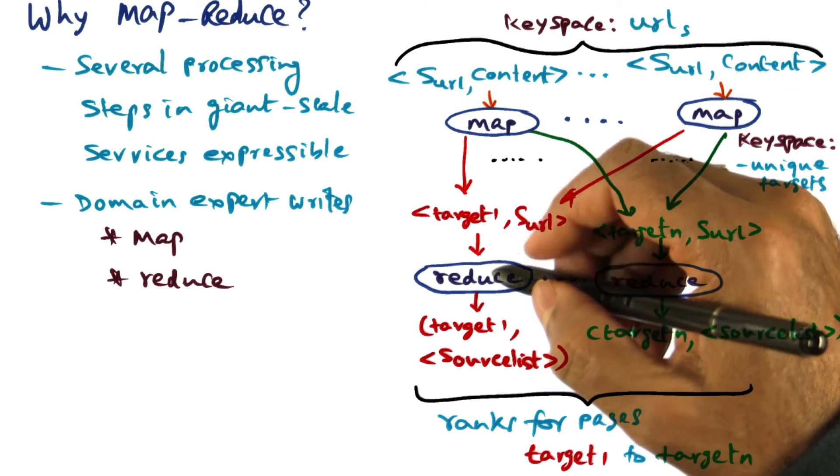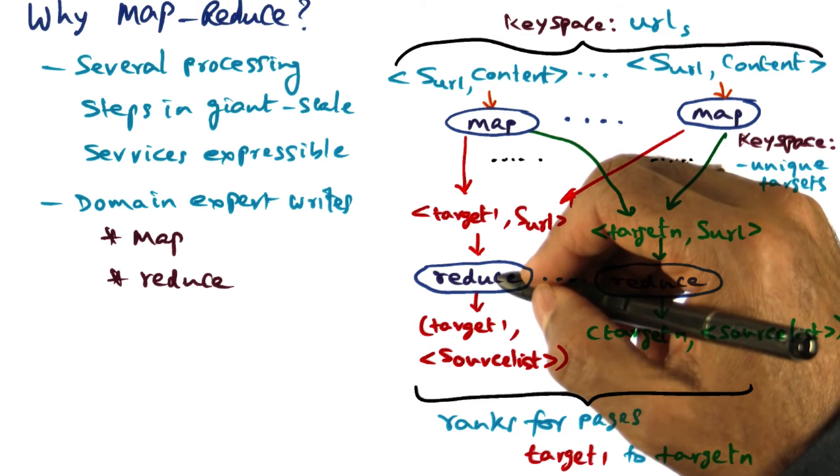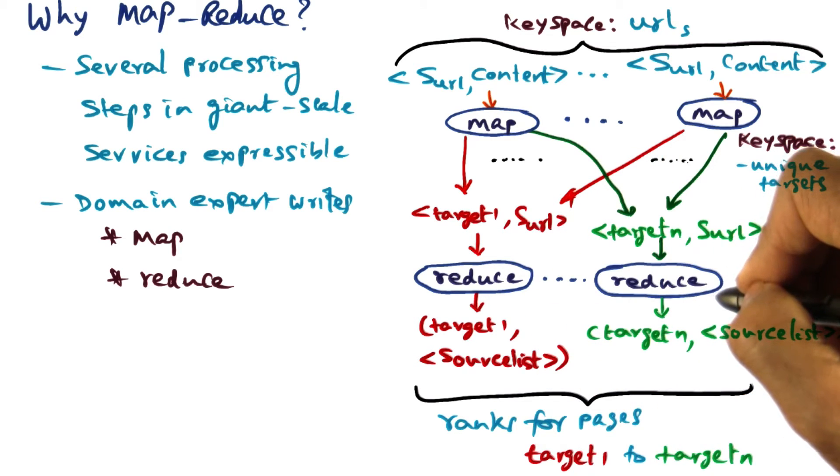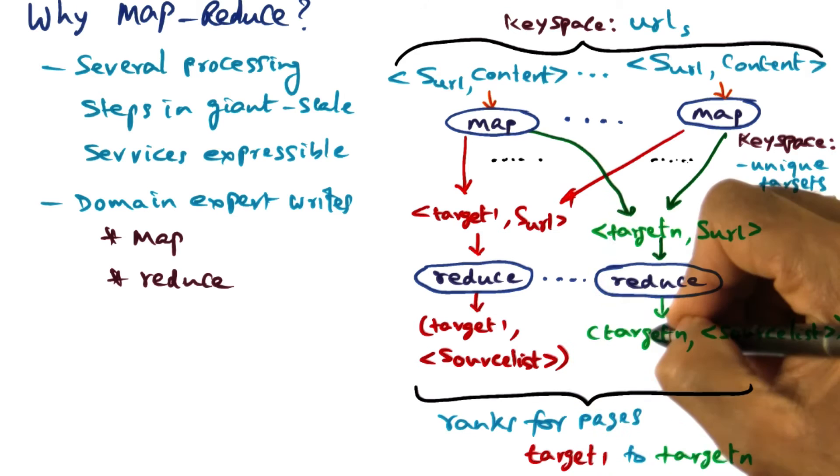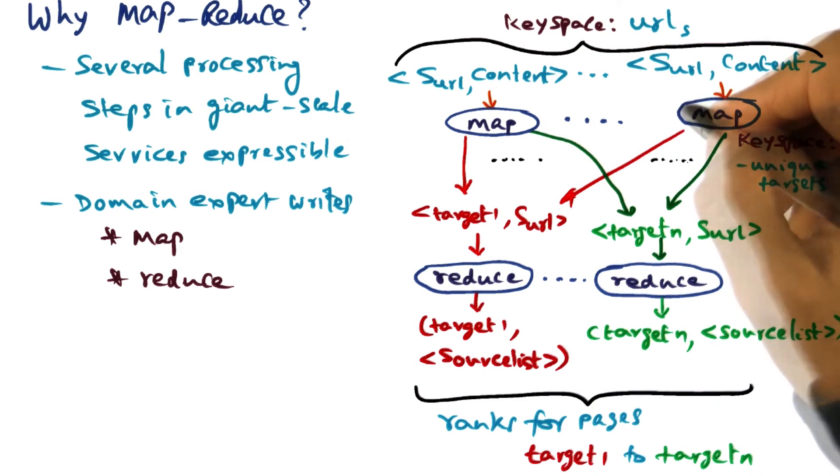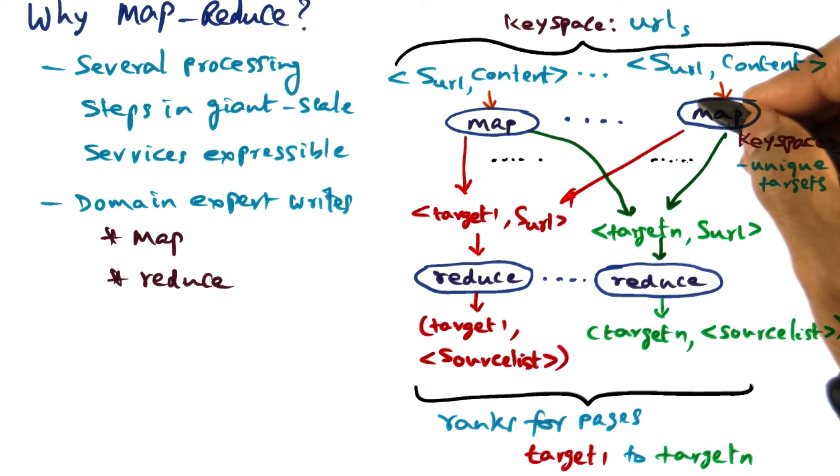And the job of a reducer is once again aggregation, and you have as many reducers as the number of unique targets you're trying to identify in the input data set. Very similar to the previous application that we went over.